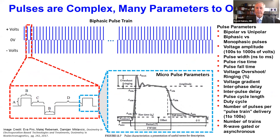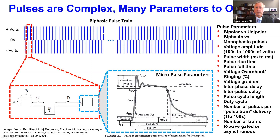Pulsed field ablation, unlike RF, has many parameters to be considered. Each particular pulse has a variety of things that can be modulated, and each pulse can be put together in a train, can be monophasic or biphasic. The pulse width, amplitude, train number, and interpulse distance — all of these things can be adjusted. The question is: what's important and what translates into safe and effective ablation?